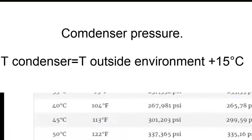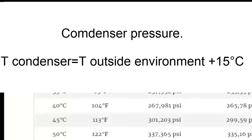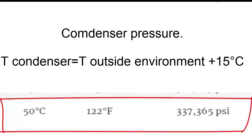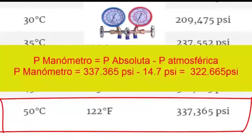To know the high pressure of equipment that works with R404A, simply use the room temperature increased by 15 degrees Celsius and look for the pressure value in the table. For example, for an ambient temperature of 35 degrees Celsius, we increase it by 15 degrees to obtain 50 degrees Celsius. The absolute pressure is 337.365 PSI; subtracting atmospheric pressure of 14.7 PSI results in a gauge pressure of 322.665 PSI.